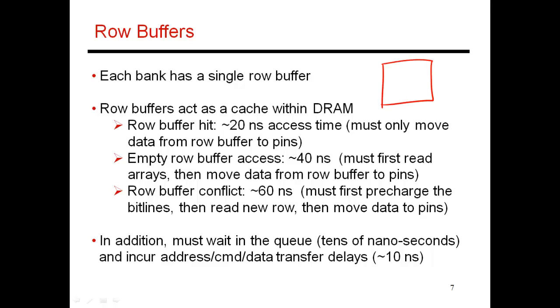So here's my array. And when I need to access a row, I essentially activate the word line. And all the cells that are sitting in this row then basically place their data onto what are called bit lines. So this is your word line. And this is your bit line.